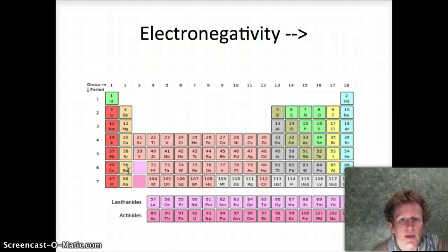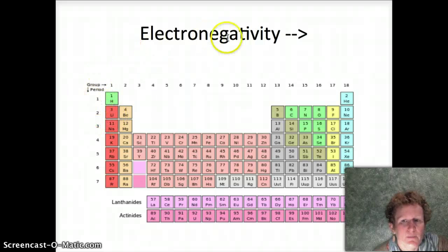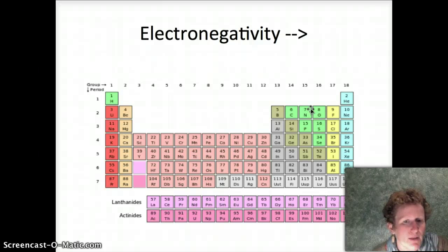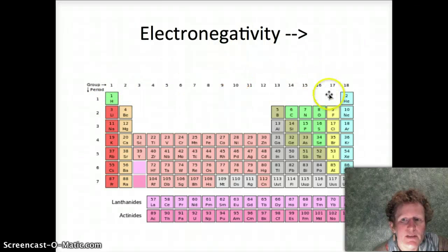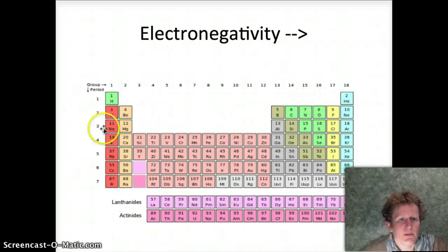Electronegativity predicts if a covalent bond is going to be polar. We look at the difference in electronegativity. There's a lot of electronegativity on this side of the periodic table and very little here. So if there's a big difference in electronegativity — like between hydrogen and oxygen — an electron is not going to be shared equally and a molecule will be polar. Remember, polar molecules make hydrogen bonds. If there's a big difference in electronegativity, you get a covalent bond but the electrons are not shared equally and you get a polar molecule — or you might get an ionic bond, but that's another story.